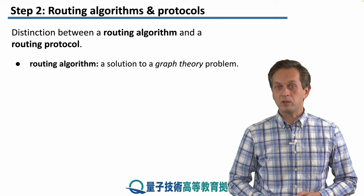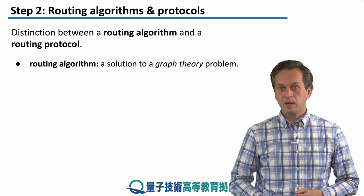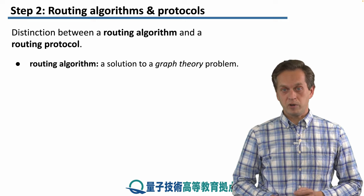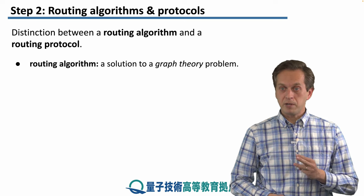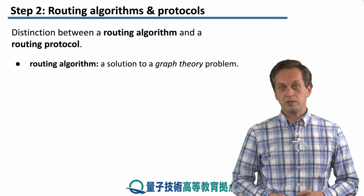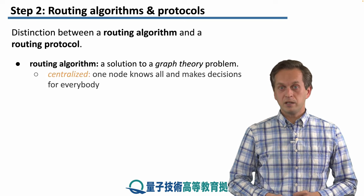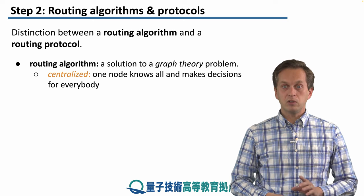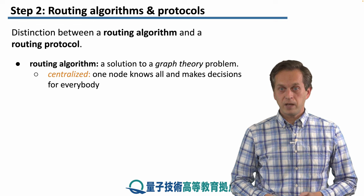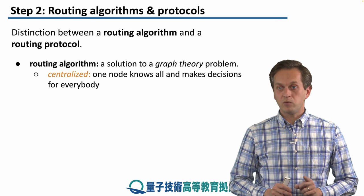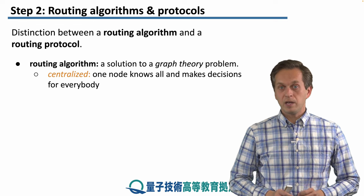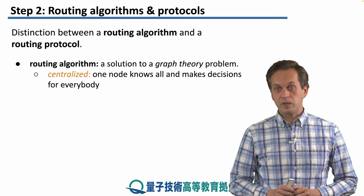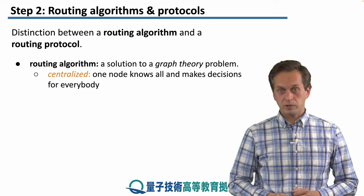Let's talk about what a routing algorithm is. A routing algorithm is basically a solution to a graph theory problem, and we're going to talk about three different categories. The first one is a centralized one, where we have one node that knows everything about the network, and all the decisions are made by that single node. It makes the decisions and then distributes corresponding instructions to the nodes of the network.